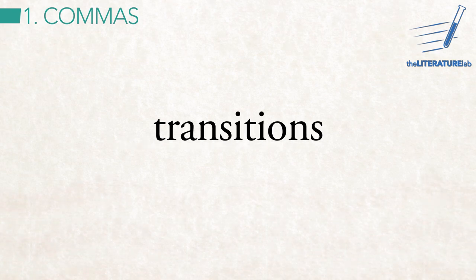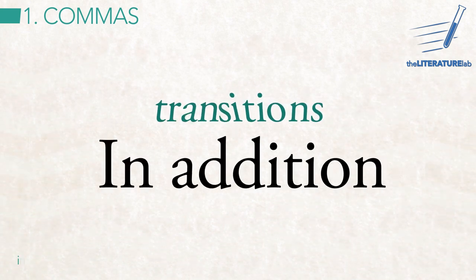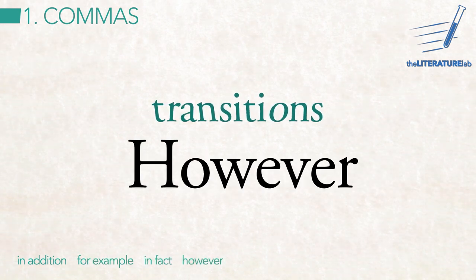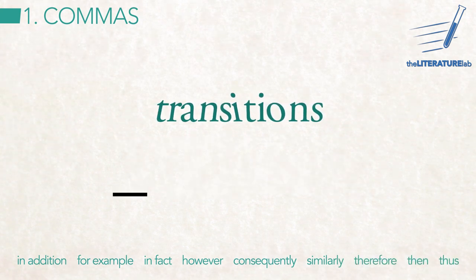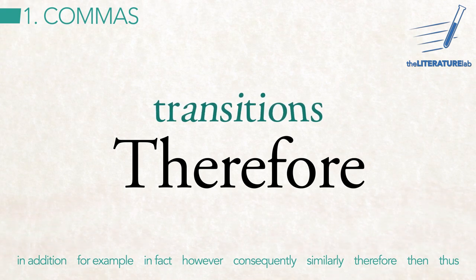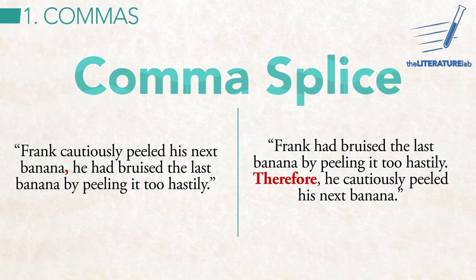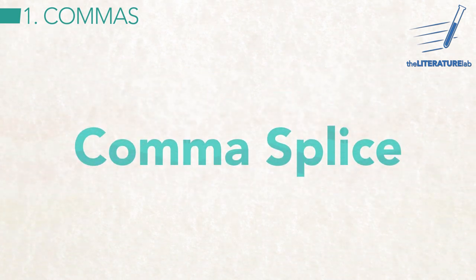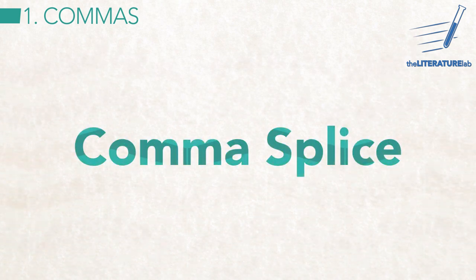Other words can help you, including transitions. These are words or phrases that show how your thinking works. Examples include: in addition, for example, in fact, however, consequently, similarly, therefore, then, and thus. In general, remember: commas should only separate dependent clauses from independent ones, not two independent clauses, which are complete sentences.